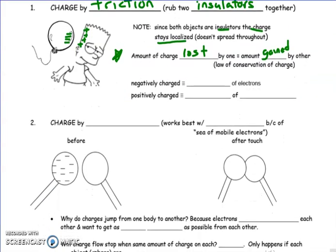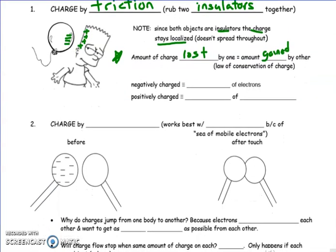So a fundamental tenet of this is the amount of charge lost by one equals the amount gained by the other. And of course, that's the law of conservation of charge. And in terms of describing why something is negatively charged, it's because it has an excess of electrons. It gained electrons. Whereas a positive charge is an excess of positives? No.